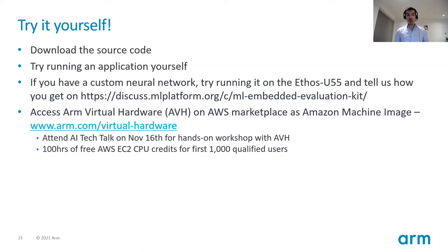My ask: please download the source code today and try running an application yourself using the build_default script. If you have a custom neural network, try running it on Ethos U55 and tell us how you get on. You can also access Arm Virtual Hardware at arm.com and get 100 hours of free AWS EC2 compute credits for the first 1,000 qualified users. Make sure to sign up for the upcoming ML Embedded Evaluation Kit workshop as well.